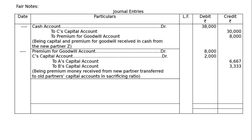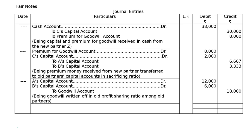Third entry: Goodwill is already appearing in the books at 18,000 and should be written off in the old ratio of 2:1. A's capital account debited 12,000 and B's capital account debited 6,000, to goodwill account 18,000. Being goodwill written off among old partners in old profit sharing ratio. Total of both debit and credit columns is 66,000 each. This is the final answer.